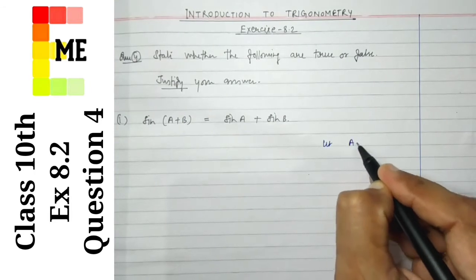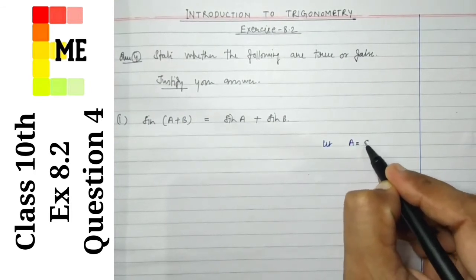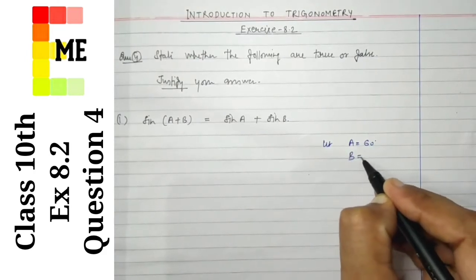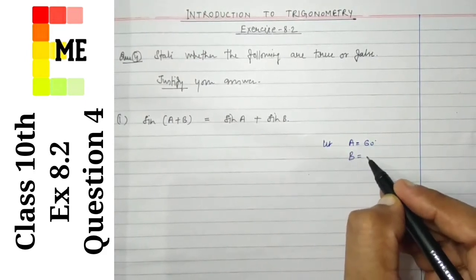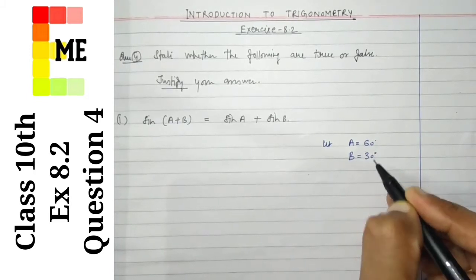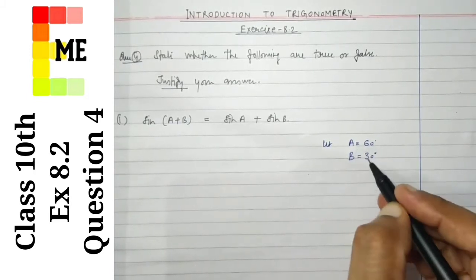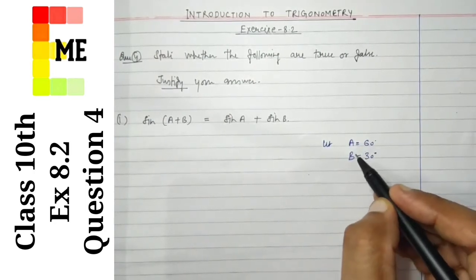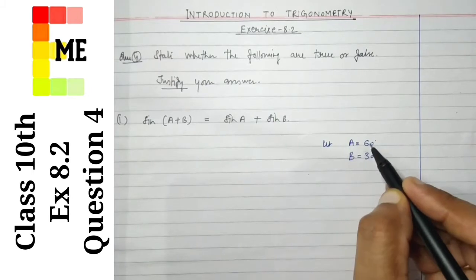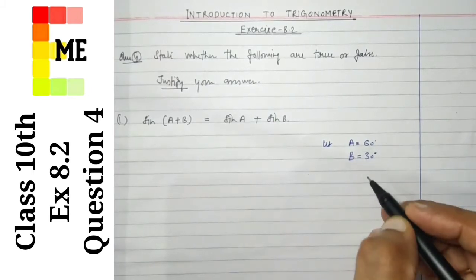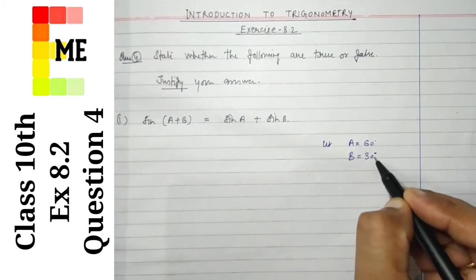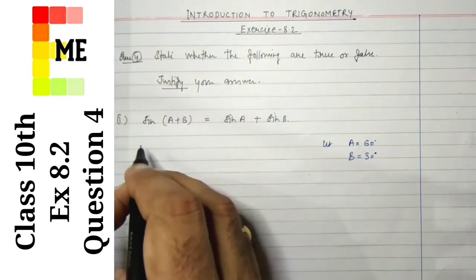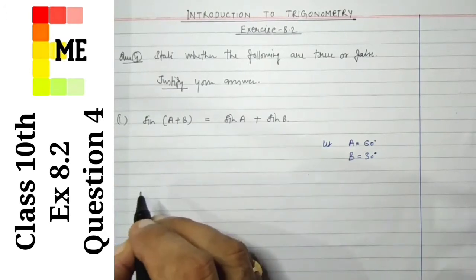Let us assume A is equal to 60 degrees and B is equal to 30 degrees. We may also take A = 45 and B = 30, or A = 30 and B = 45, or B = 60 and A = 45 — there are many ways. Currently I am taking A = 60 and B = 30 to make the calculation easier.